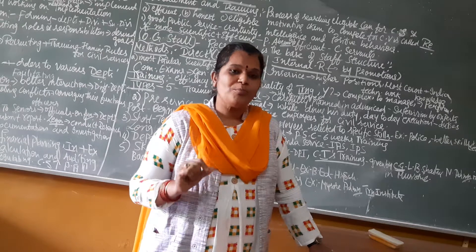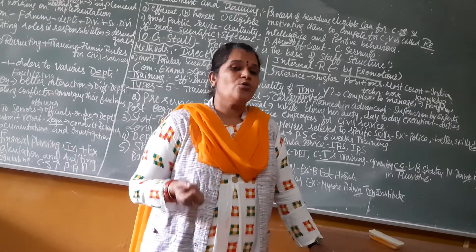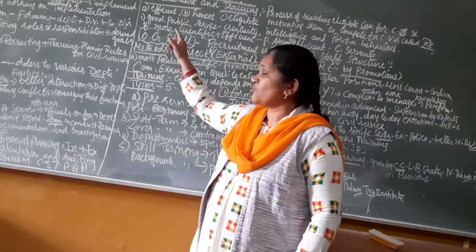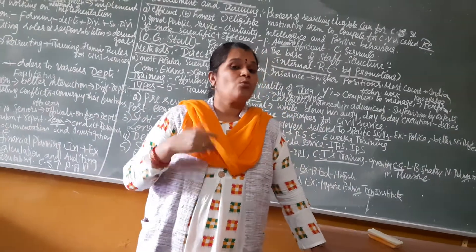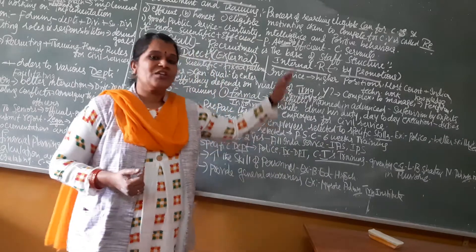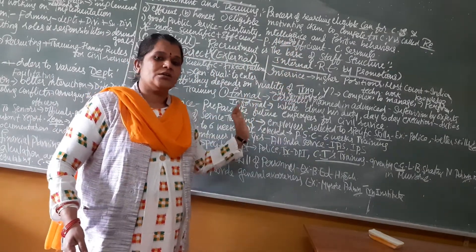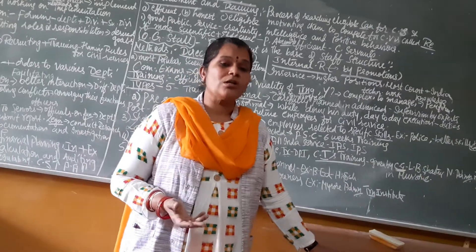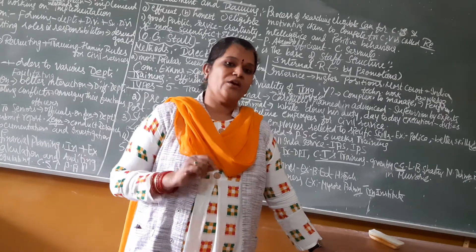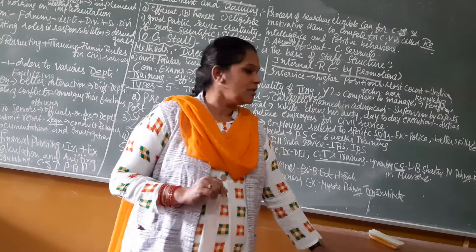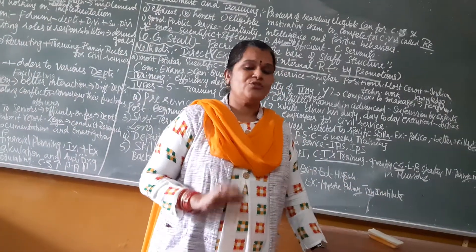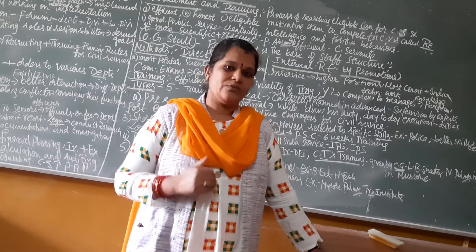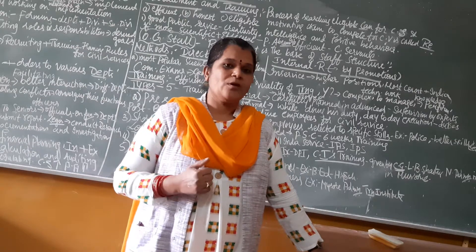To summarize, we have understood the meaning of public administration, how the subject evolved, who is called the father of public administration, its importance and scope through POSDCORB, the meaning of recruitment and training, the two methods of recruitment — direct and internal — and the five types of training. Since the portion has been reduced to 30%, studying what has been explained is sufficient for the examination. Take out your textbook, glance at the content taught, and go through the lesson.